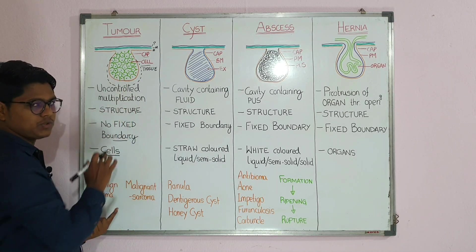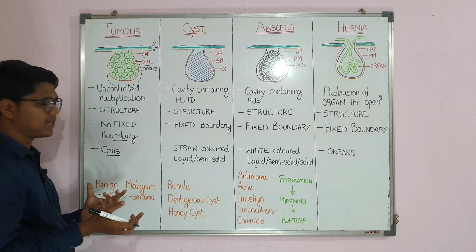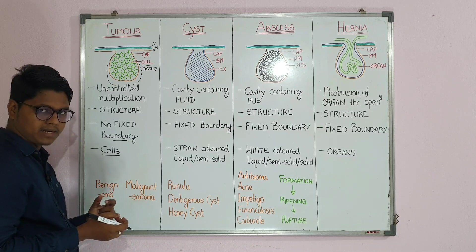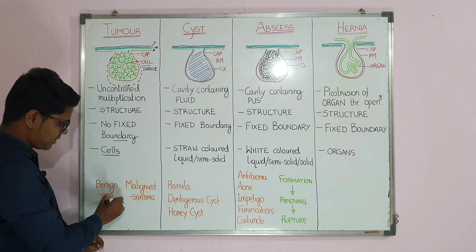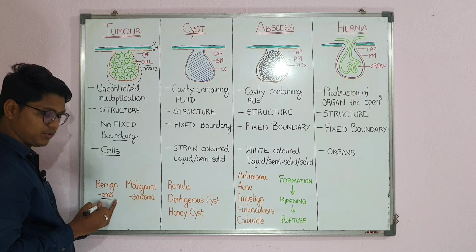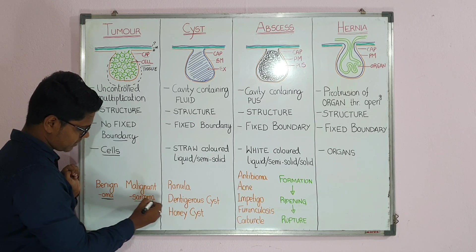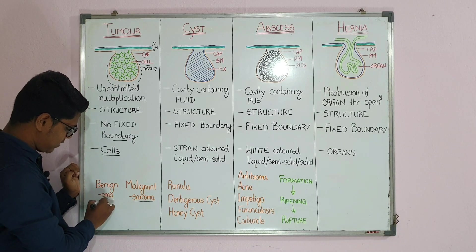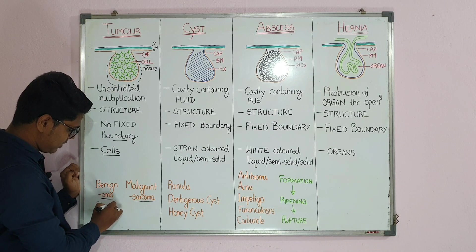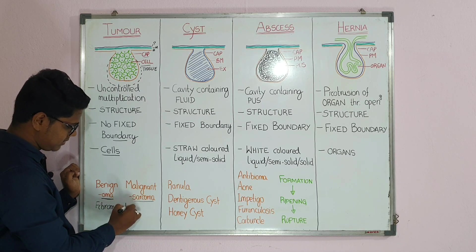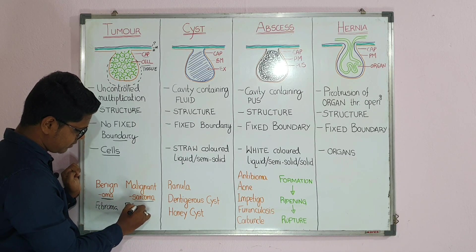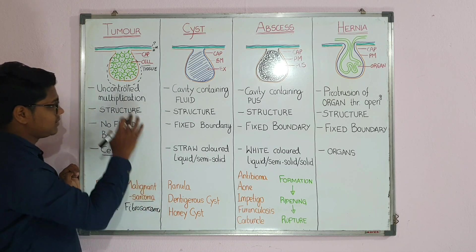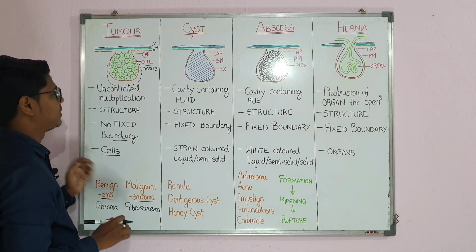Tumors can be benign and malignant. In benign tumors, usually the suffix '-oma' is used, whereas in malignant cases the suffix '-sarcoma' is used. For example, a tumor of fibrous tissue — if it's benign it will be fibroma; if it is malignant, then fibrosarcoma. In the next class I will tell you in detail about tumors.